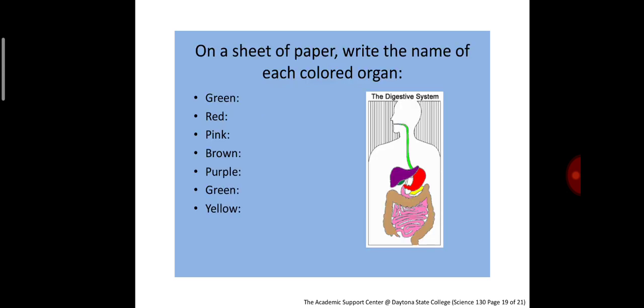On a sheet of paper, write the name of each colored organ. This is what you have to do.